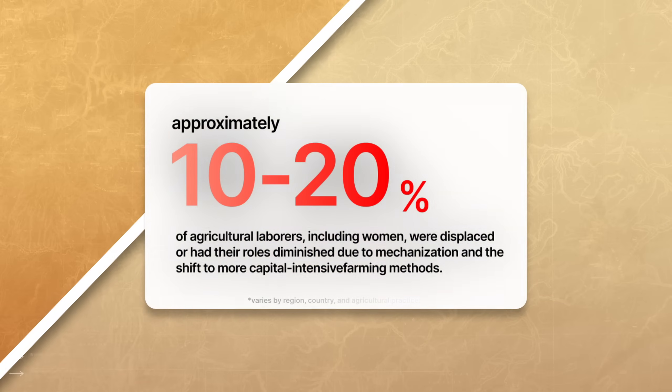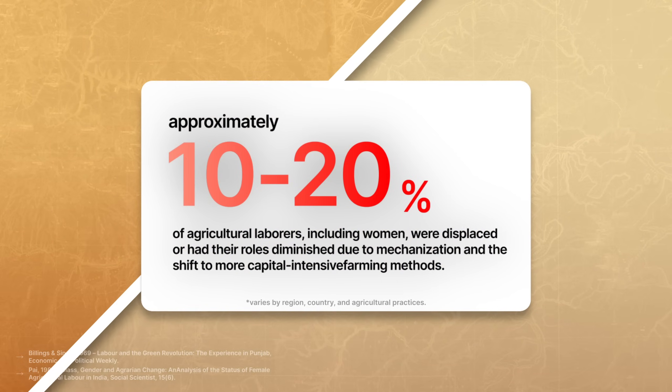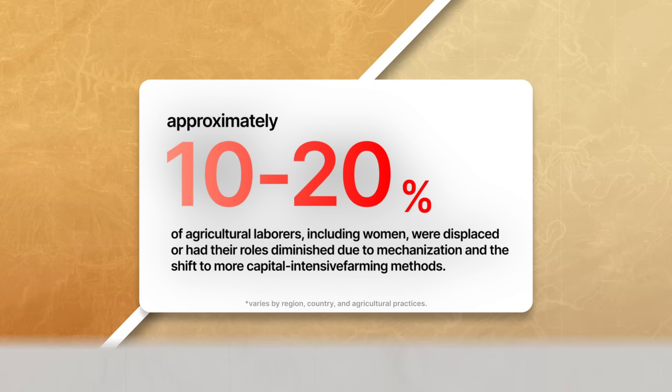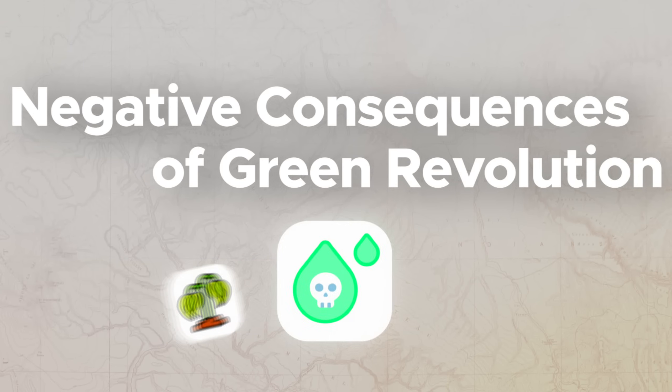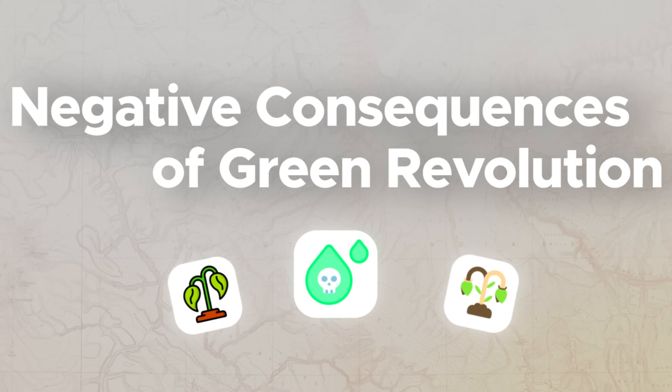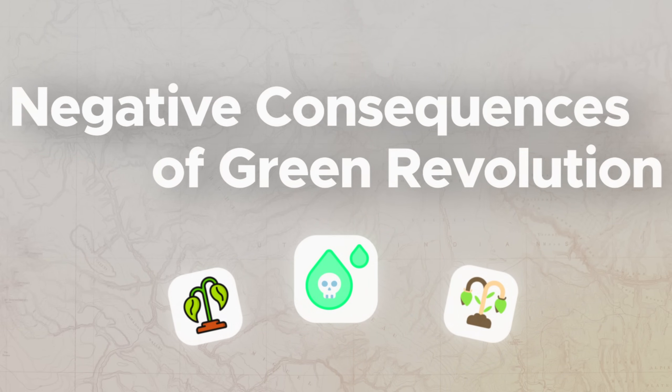While the increase in machinery and agricultural production did increase agricultural output, it also decreased the amount of jobs for women who traditionally worked in agriculture. This resulted in more inequalities between individuals in certain societies, which leads us to the negative consequences of the Green Revolution.